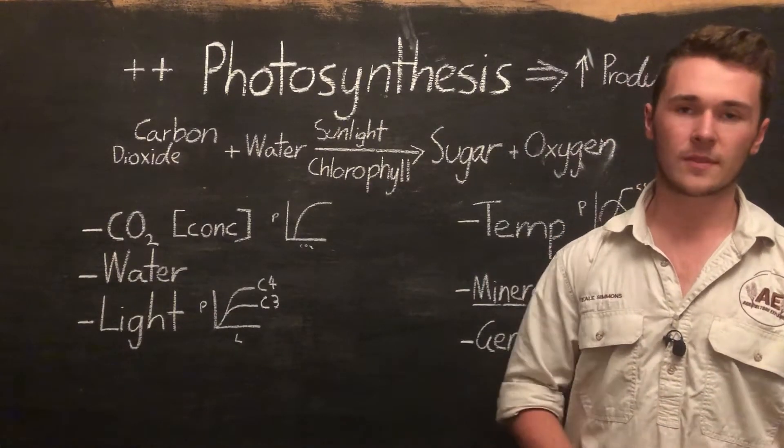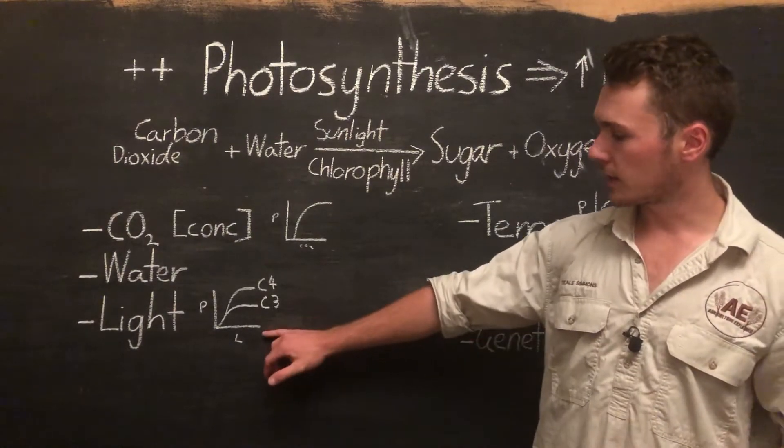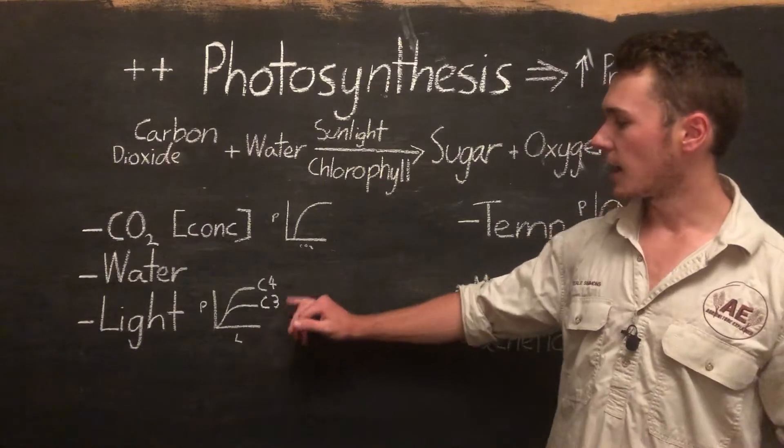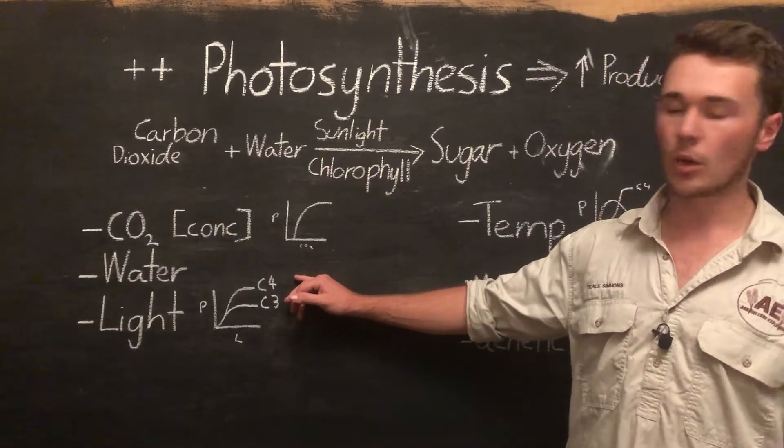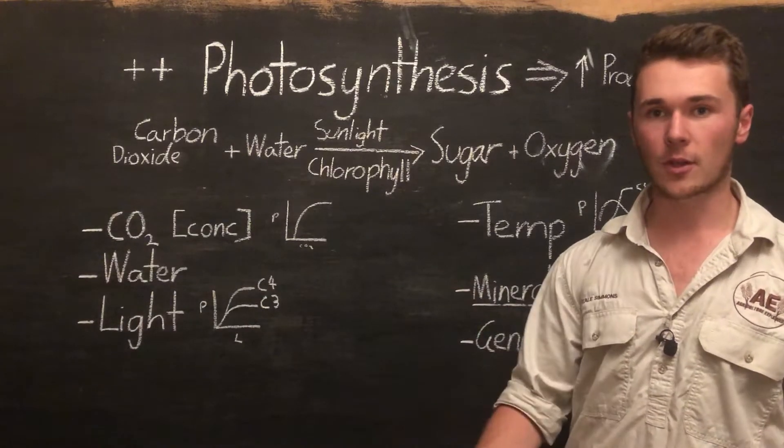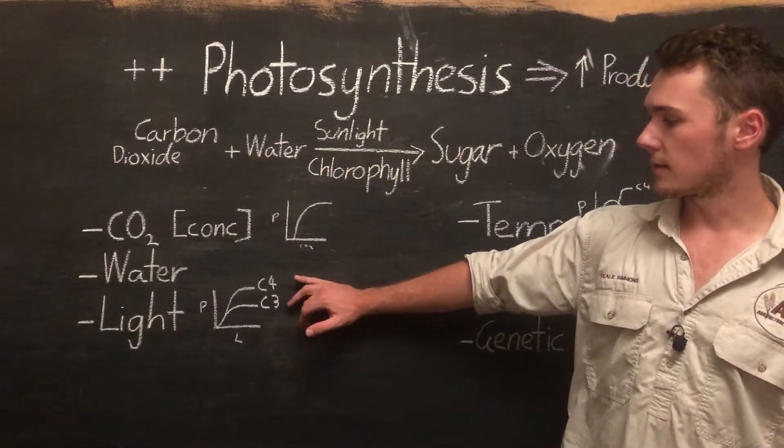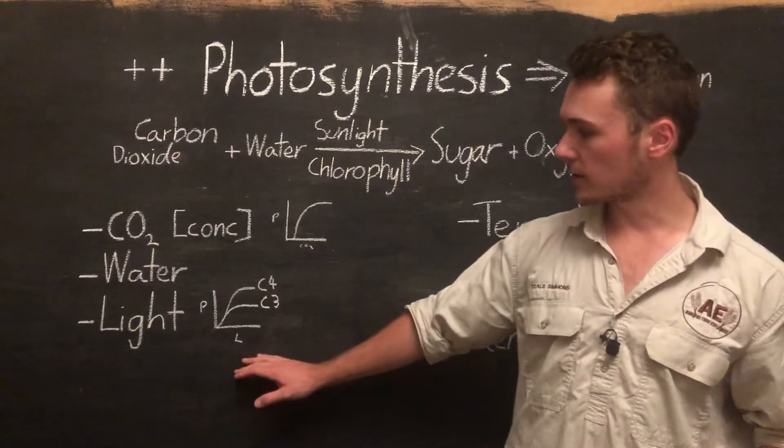It's a more water-efficient and light-effective process. When our light concentration increases, our C4 plants are going to photosynthesize more, whereas our C3 plants will still increase their photosynthesis rates but not as much as the C4 plants.